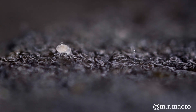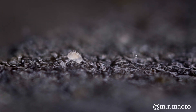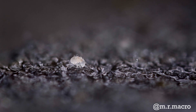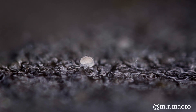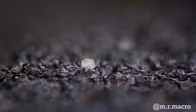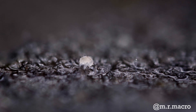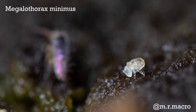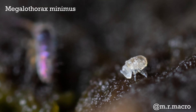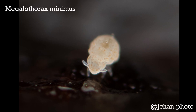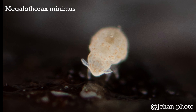And finally, there's the Neelipleona, which I've never actually seen myself, but I would really like to. These were formerly considered a family within globular springtails, but recently were split off into their own order. Neelipleona are extremely small, usually around half a millimeter or even a lot smaller than that, and they don't have any eyes and are often almost completely lacking any pigment whatsoever.